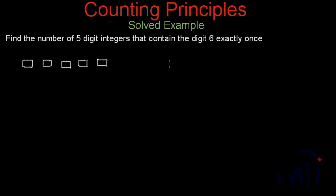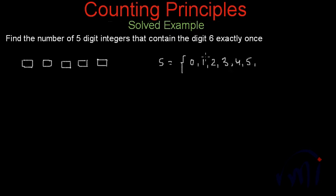Since 6 is already placed in one of the positions, the other places are to be filled with the remaining digits: 0, 1, 2, 3, 4, 5 — not 6, since it is already used — and then 7, 8, and 9. So these 9 digits are the choices available for the other 4 places.